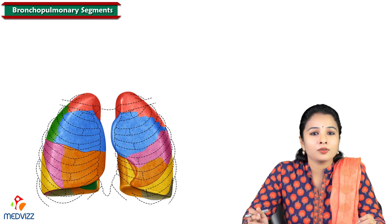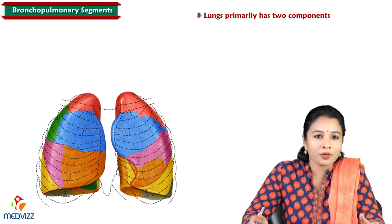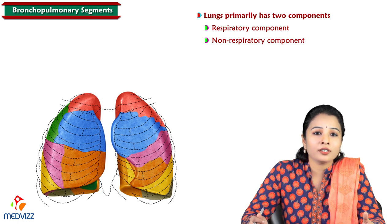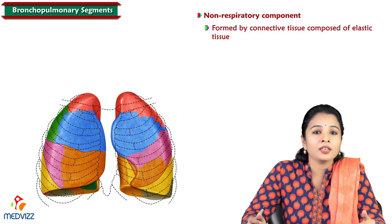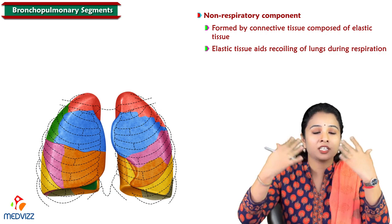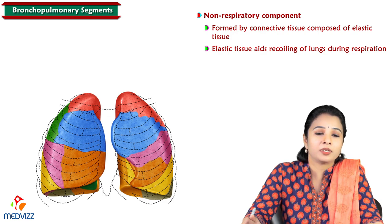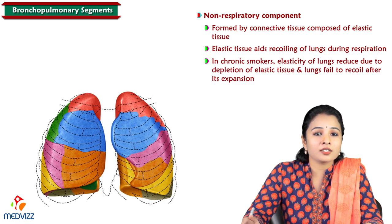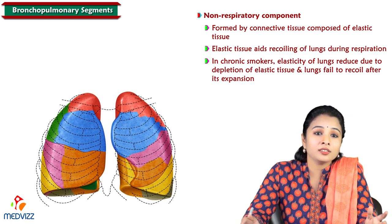Before going into bronchopulmonary segments, let us understand that the lung has two components: the respiratory component and the non-respiratory component. The respiratory component has bronchopulmonary segments, whereas the non-respiratory component is formed by connective tissue mainly composed of elastic tissue. This elastic tissue aids recoiling of lungs during expiration. In chronic smokers, the elasticity of the lungs reduces due to depletion of elastic tissue, and thereby their lungs fail to recoil after expansion.